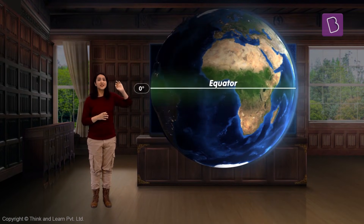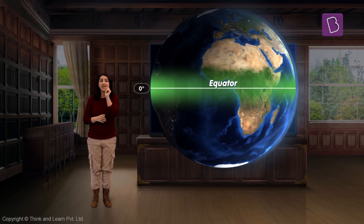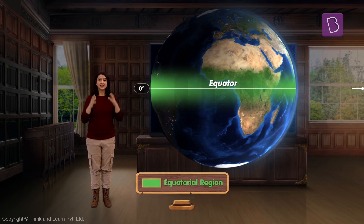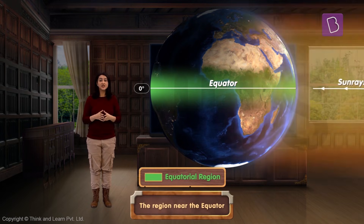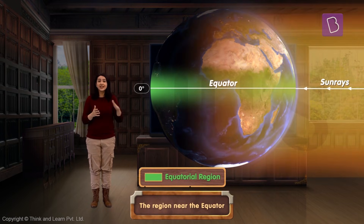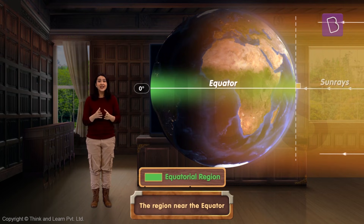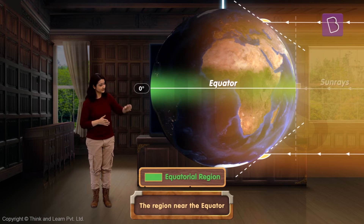Now, if we go near the equator, the region between 5 to 10 degrees near the equator is called the equatorial region. The sun's rays fall directly at the equator in a straight line and are slightly slanted at the poles.